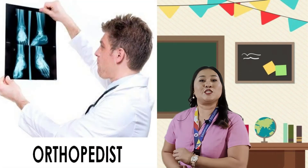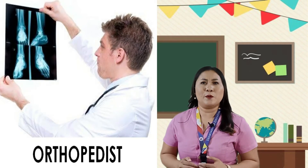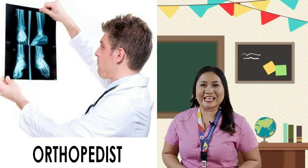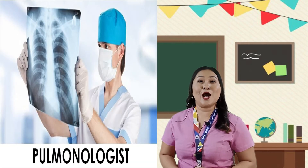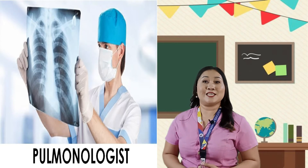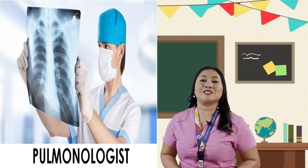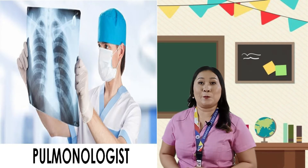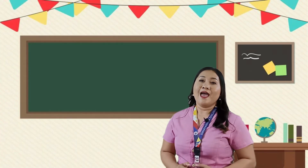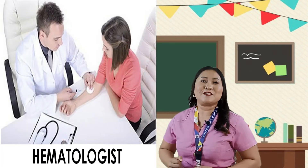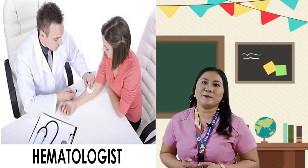An orthopedist is a physician who treats congenital or functional abnormalities of the bones with surgery, casting, and bracing. A pulmonologist specializes in the respiratory system. This includes asthma, chronic obstructive lung disease (COPD), lung cancer, and tuberculosis. A hematologist is a physician who specializes in diagnosing and treating diseases of the blood.